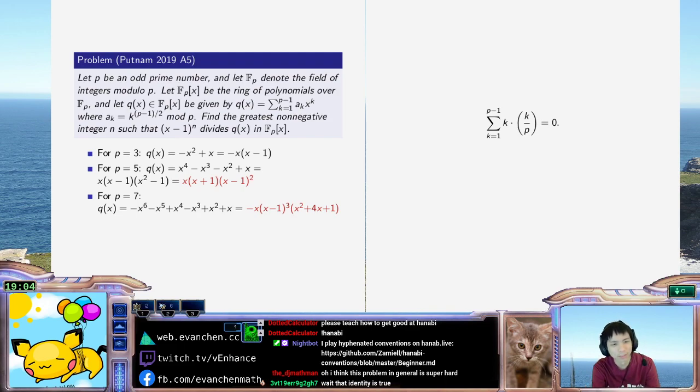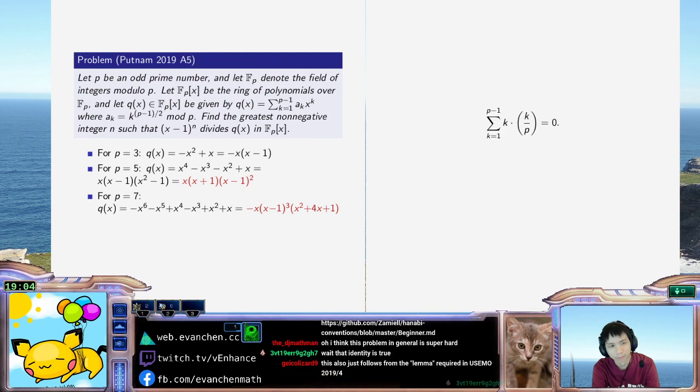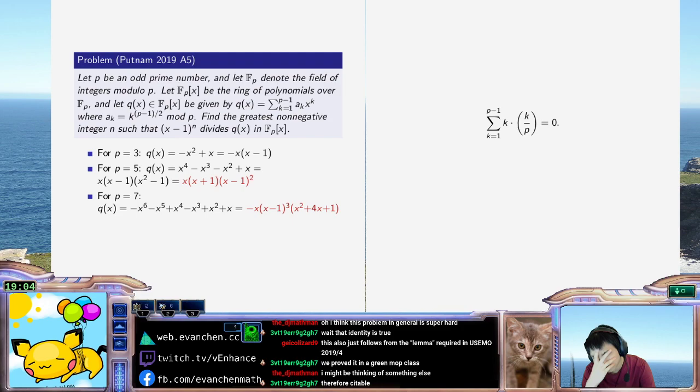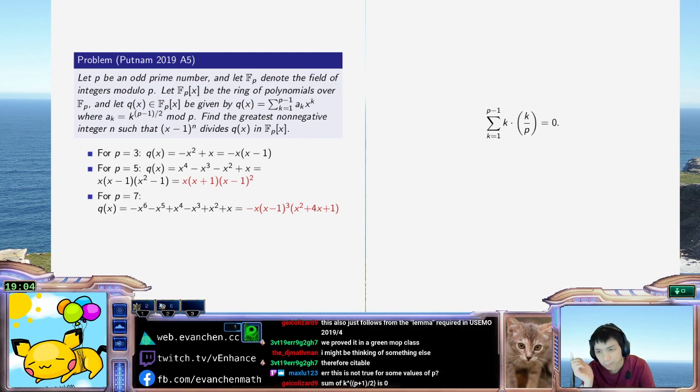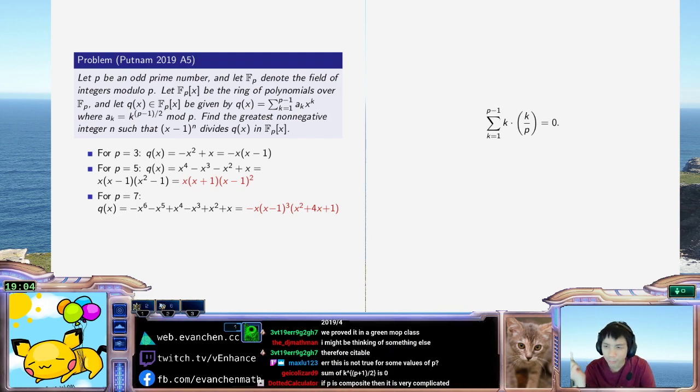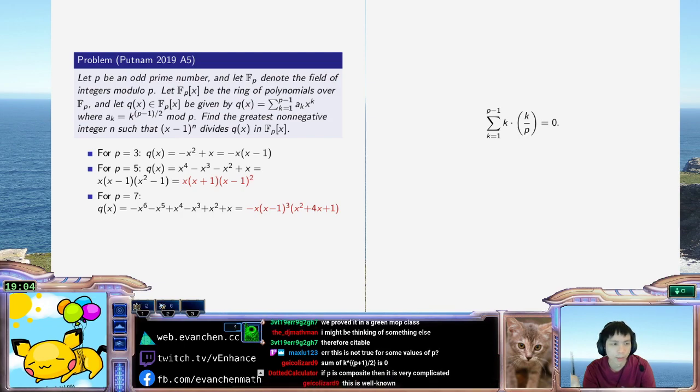I mean, the identity is definitely true because the answer is greater than 2 for... We proved it in a green mob class. Oh man, why haven't I seen it? What? How do you do this? Yeah, actually, if I'm going to sum this way, I might as well take a primitive root, right? Like, let g be a primitive root.